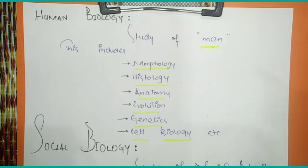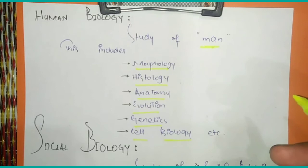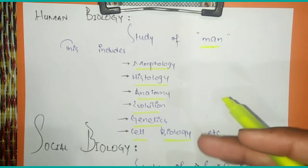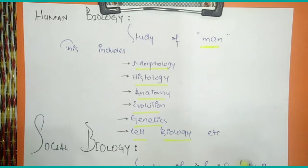In human biology: morphology refers to the external structure; histology is the study of cells; anatomy is the study of internal structure; evolution relates to genetics and genes; and cell biology studies organisms at the cell level. All of this combined is called human biology.